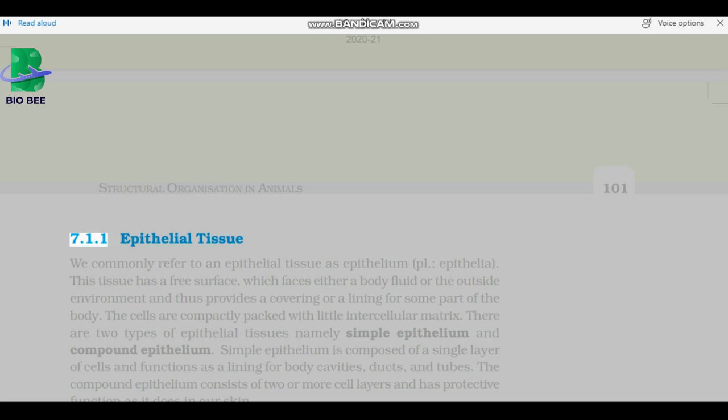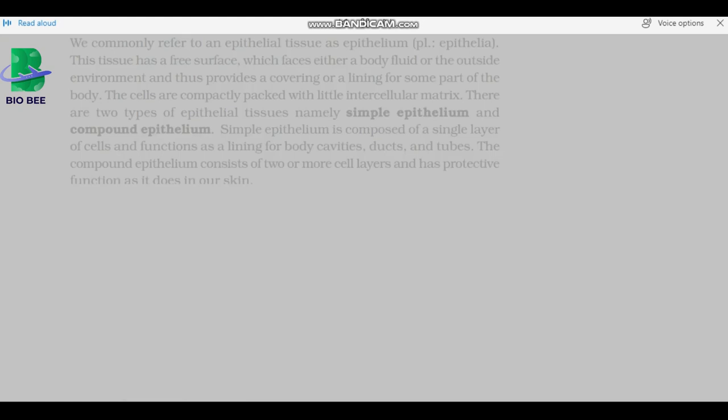We commonly refer to an epithelial tissue as epithelium, plural epithelia. This tissue has a free surface which faces either a body fluid or the outside environment and thus provides a covering or a lining for some part of the body. The cells are compactly packed with little intercellular matrix.